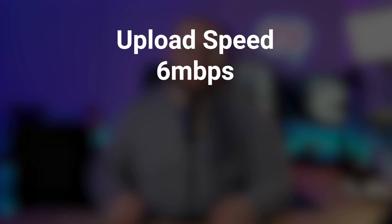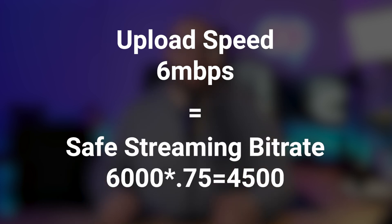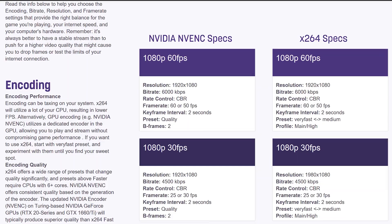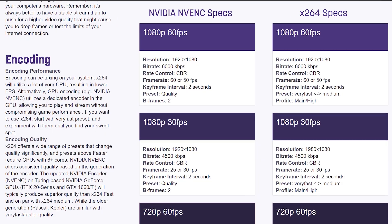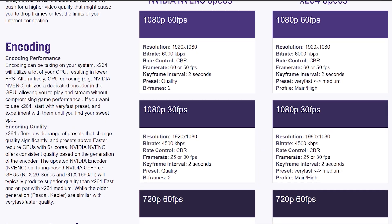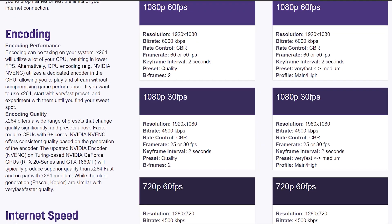If you have a 6 megabit upload, then a safe maximum bitrate would be 4500. Now that you have this information, Twitch has some recommendations for various bitrates and resolutions that are listed on their website.